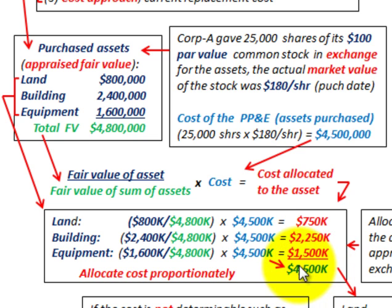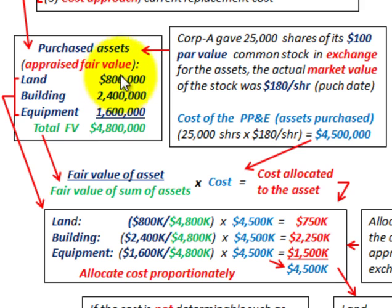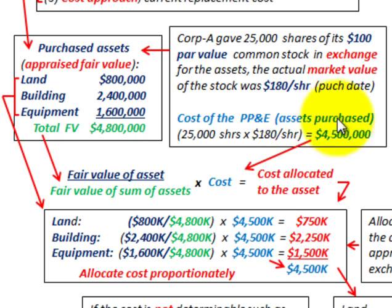The big problem you're going to run into when allocating a lump sum or single sum purchase is establishing the fair value of each of the assets — and I'm using appraised fair value here. You also have to establish the cost you're paying for those assets, and you can run into problems in either case.